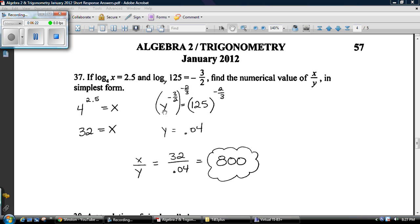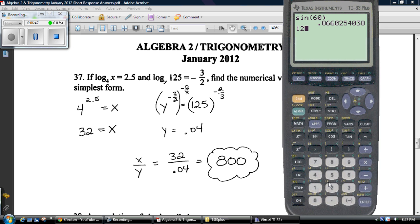Then you do the same thing over here, right? y^(-3/2) = 125. And then you're kind of screwed. You're like, oh my God, what am I going to do? Well, we've got to get y by itself. So you raise both sides to the reciprocal of that power, because when this multiplies that, you get y to the 1st. And 125 to the negative 2/3rds, just use your calculator. 125 raised to the negative 2/3rds, make sure you put parentheses, is 0.04, divide them, you get 800.